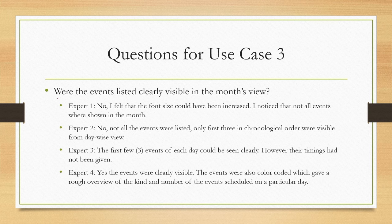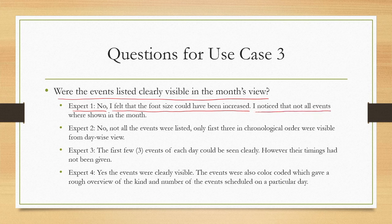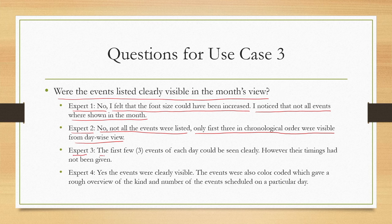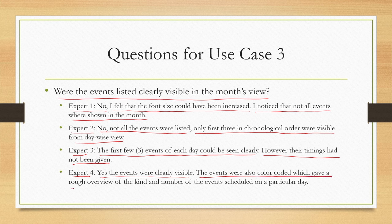Question: were the events listed clearly visible in the months view? Experts 1 and 2 said no — font size could be larger and not all events were shown, only the first three in chronological order. Expert 3 agreed the first few events were visible but timings were missing. Only Expert 4 said yes, noting events were color coded for a rough overview. Majority disagreed with visibility.